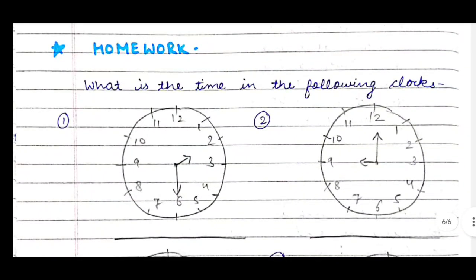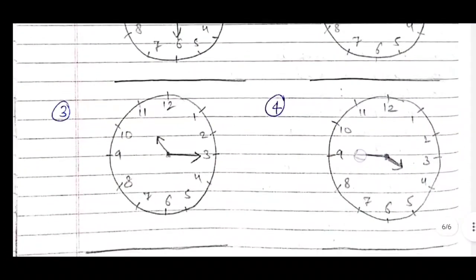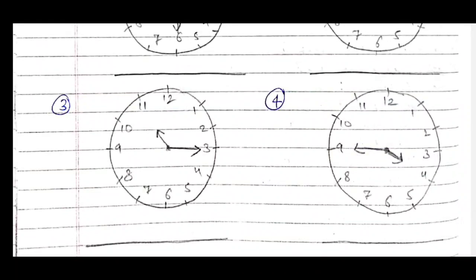Then we will give them homework: what is the time in the following clocks? The question is written on the board and students copy it to do at home. We make clock diagrams and they have to write the time. You can also ask them to write the time in both ways, like 7:15 or quarter past seven.